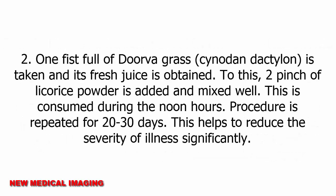One fistful of Dorva grass is taken and its fresh juice is obtained. To this, two pinches of licorice powder are added and mixed well. This is consumed during the noon hours. The procedure is repeated for 20 to 30 days. This helps to reduce the severity of illness significantly.